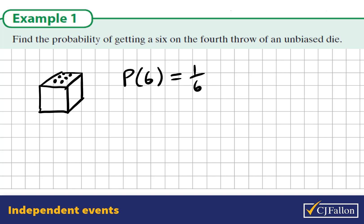So the probability of getting a 6 on the 4th throw is the very same as getting a 6 any other time. The probability of getting a 6 when you throw a dice is always 1 sixth. So that is the answer.